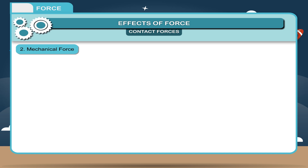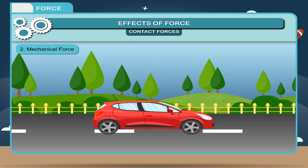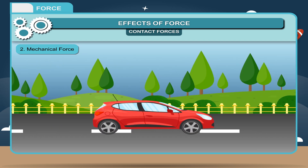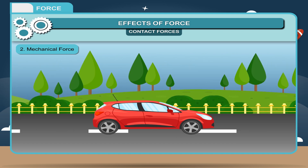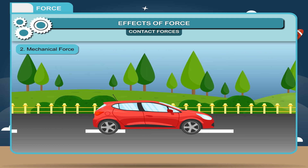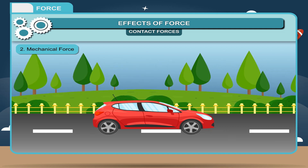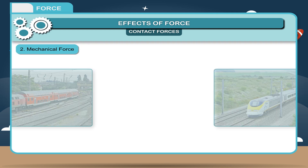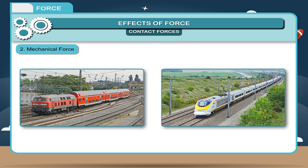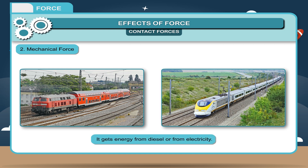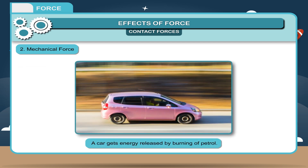Mechanical force: The force exerted in moving a body with the help of a machine is called mechanical force. Machines need energy from other sources to exert force on an object. A railway engine pulls a train by exerting mechanical force, getting energy from diesel or electricity. Similarly, a car gets energy from the burning of petrol.